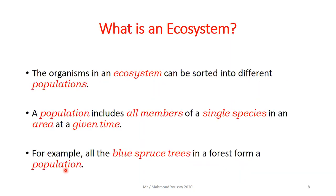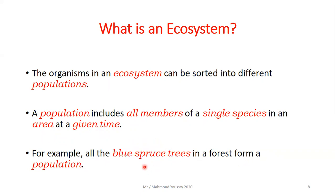The organisms in an ecosystem can be sorted into different populations. A population includes all members of a single species — a single kind or type of organism — in an area at a given time. For example, the blue spruce trees form a single species in a forest and make up a population.